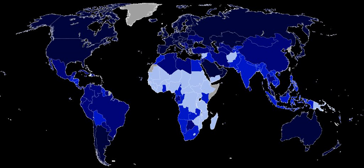x index = (x − x_min) / (x_max − x_min), where x_min and x_max are the lowest and highest values the variable x can attain, respectively. The Human Development Index then represents the uniformly weighted sum with one-third contributed by each of the following factor indices.